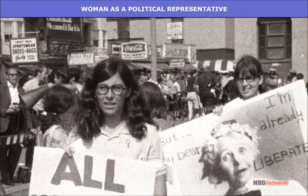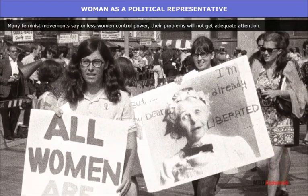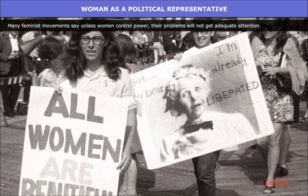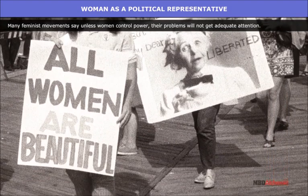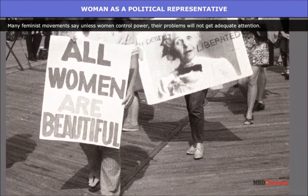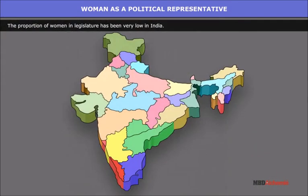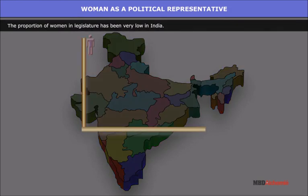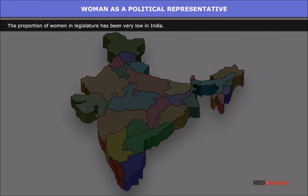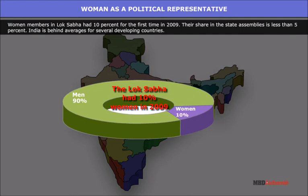Women as political representatives: many feminist movements say that unless women control power, their problems will not get adequate attention. The proportion of women in the legislature has been very low in India. Women members held only 10 percent of seats in the Lok Sabha for the first time in 2009, and their share in state assemblies is less than 5 percent.